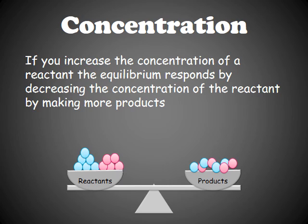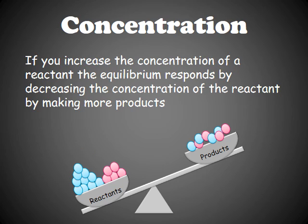In industry, what you do is take away the products so the reaction favors creating more products — the equilibrium favors the products. And that's the example there: when you increase the amount of reactants, what's going to happen is it's going to make more products.